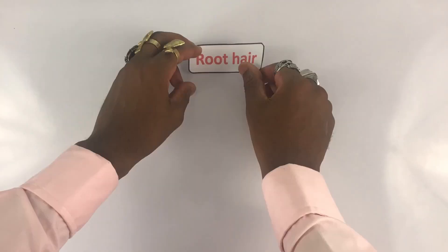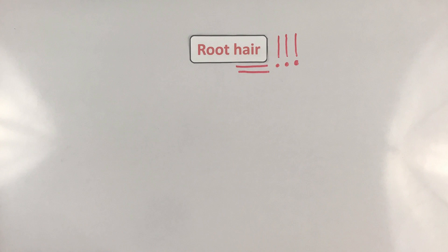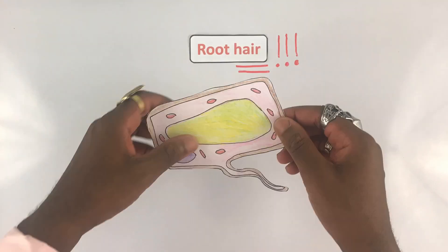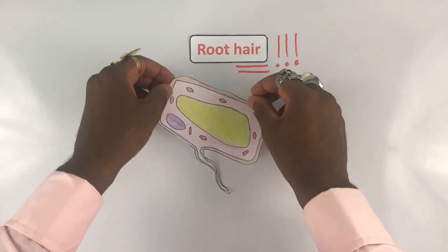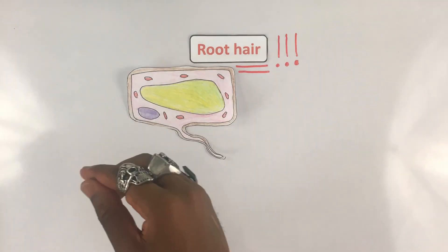One thing I want to point out is to make sure you always include the word 'hair' in the name. Don't just say 'root cell' — some students say that, and in the mark scheme they sometimes emphasize you have to say 'hair.' So: root hair cell.